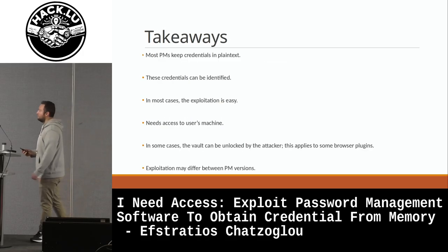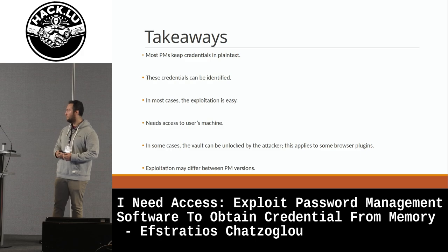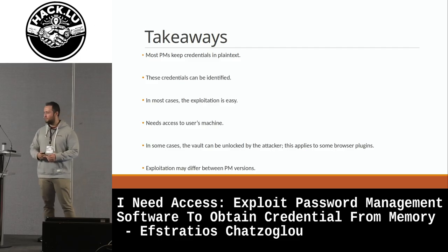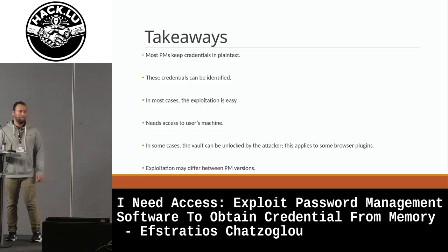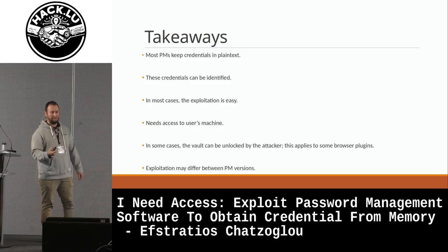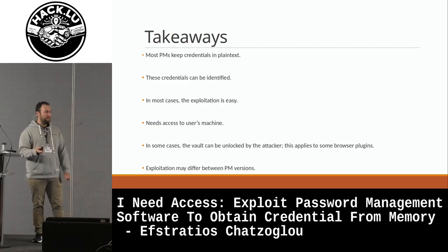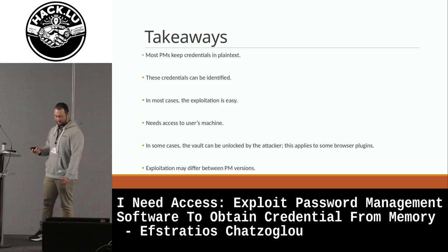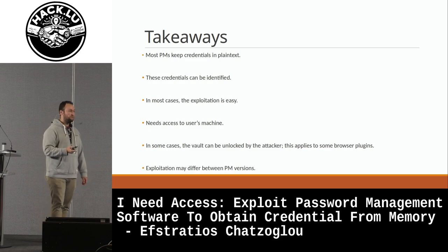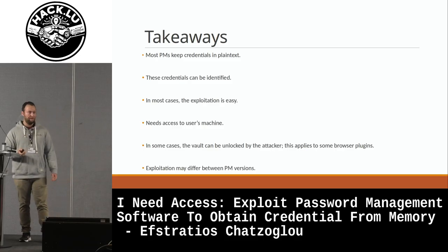A few takeaways as a summary: most password managers keep credentials in plain text within memory, and there is a way to identify and extract them. In most cases, exploitation is straightforward — we can extract information using keywords or specific bytes that lead us to the credentials. We do need access to the user's machine. In some cases the vault can be unlocked by the attacker, which applies to certain browser plugins such as Avira. The exploitation may also vary between different password manager versions.